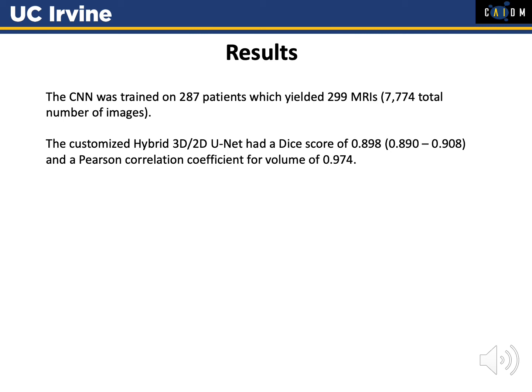The CNN was trained on 287 patients, which yielded 299 MRIs for a total of 7,774 images. These images were inputted into the hybrid 3D-2D U-Net to produce a Dice score of 0.898. The range for Dice scores across five folds was 0.890 to 0.908, and the Pearson correlation coefficient for volume was 0.974.